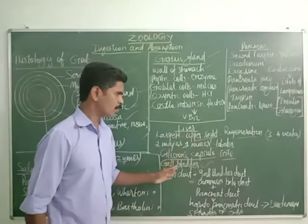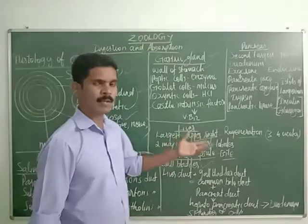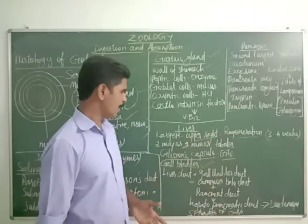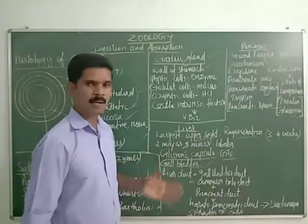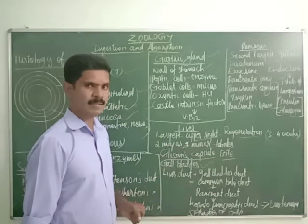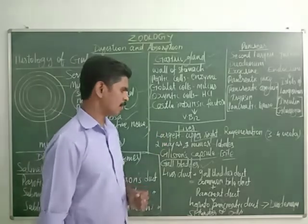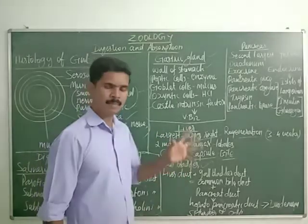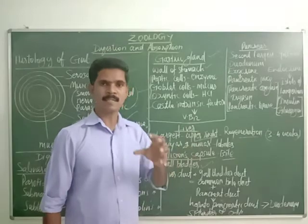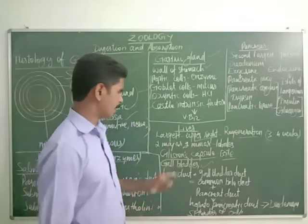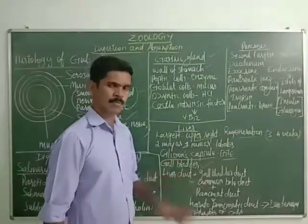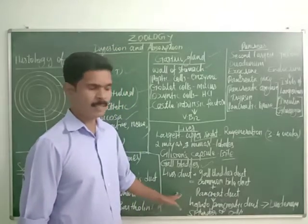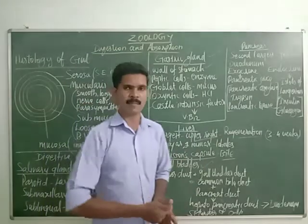There are many one-mark questions from the liver. For example: which organ has high regenerative capacity — answer is liver; which is the largest gland in our digestive system — answer is liver; the lobules of the liver are covered by which membrane — Glisson's capsule.